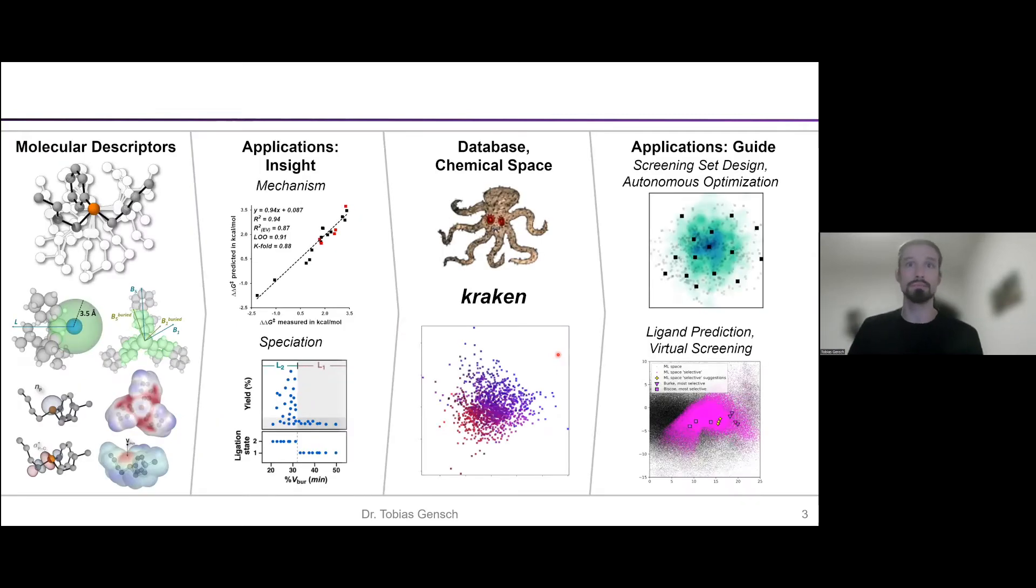Throughout my talk, I will present how we go about this and the talk is structured broadly similar to the overall general workflow of such approaches. First we need to think about how do we turn molecules into numbers. Then I will show an example of how we've used the descriptors in a very specific project to actually gain insight into the reaction mechanism. I will go on to talk about how we then took things a lot bigger to characterize the whole chemical space of a type of catalyst in a database approach, and finally show an example how we could use this in very close collaboration with experimental applications.